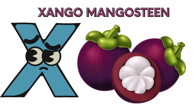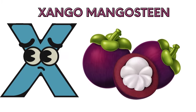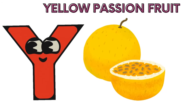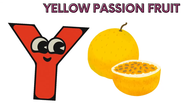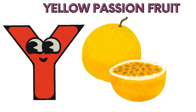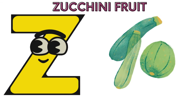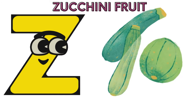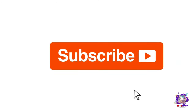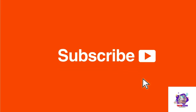X is for xango mangosteen, Z-Z, xango mangosteen. Y is for yellow passion fruit, yellow passion fruit. Z is for zucchini fruit, Z-Z, zucchini fruit.